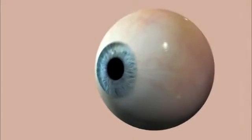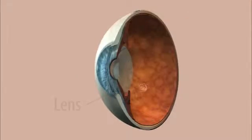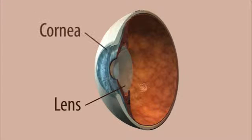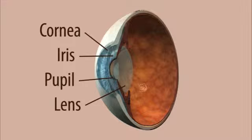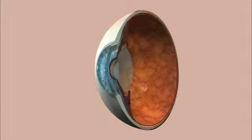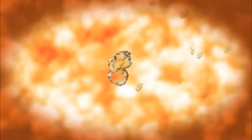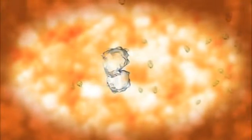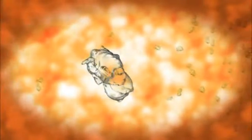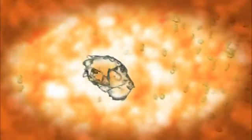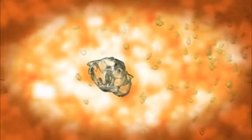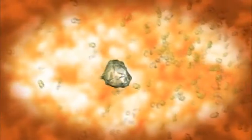A cataract is the clouding of the eye's natural lens, a structure which is positioned behind the cornea, iris, and pupil. Like the glass lens of a camera, our lens adjusts to focus our vision. The lens is mostly made up of water and protein. As we age, these proteins change and may begin to clump together, obscuring portions of the lens.